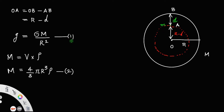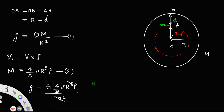Call this equation 1 and the mass expression equation 2. Substituting 2 into 1, you get g = G times 4/3 π r³ ρ divided by r². Cancel r² leaving only r, so g = 4Gπrρ/3. This is our expression for gravity at the surface — call this equation 3.